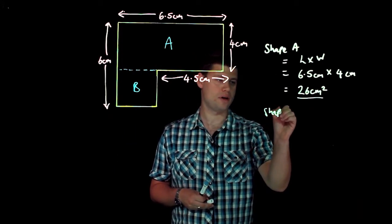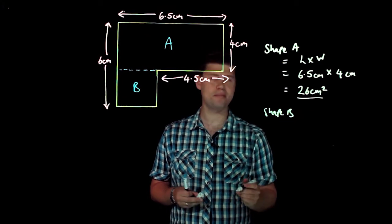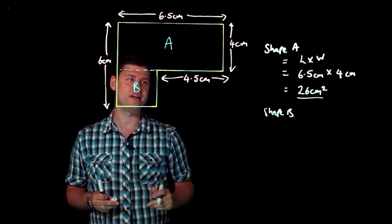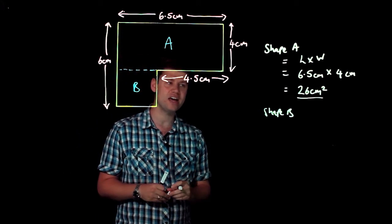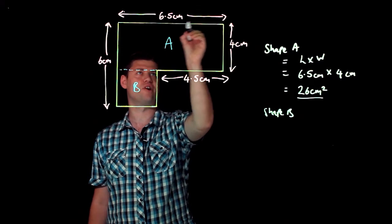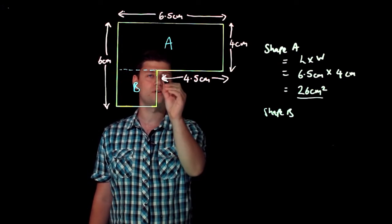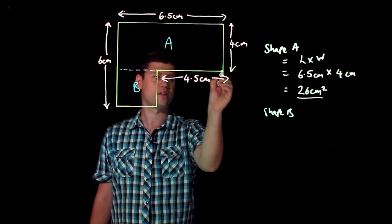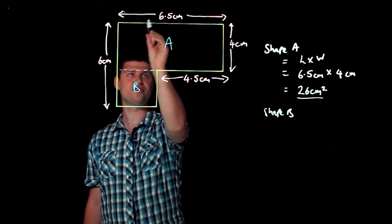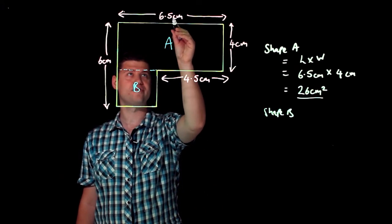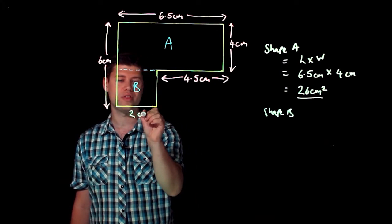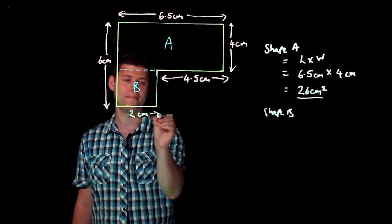Now what about shape B? Well shape B is a little bit trickier because we don't actually know what these lengths are immediately at least. However we can work those out. What we see here is that we know that this length going across is 6.5 centimeters and we know that up to here this is 4.5 centimeters in length. So therefore the difference between 6.5 and 4.5 is 2 centimeters, and so that length there must be 2 centimeters.